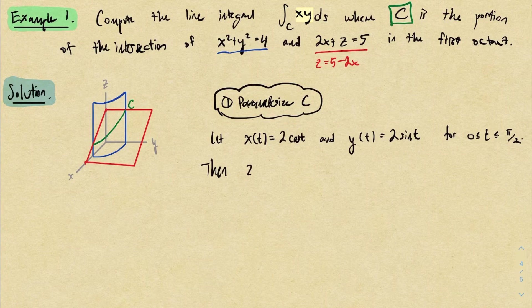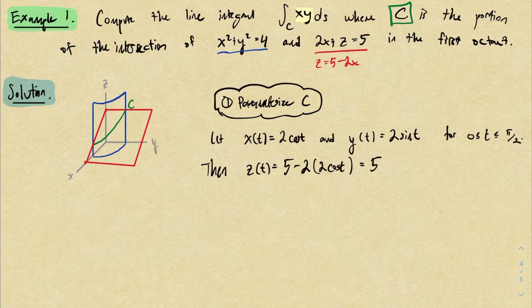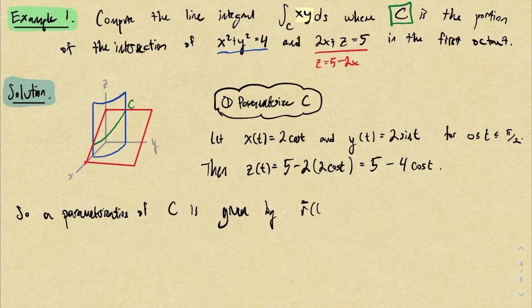But then this curve is sitting in three dimensions, so I need a z coordinate. The point is that the second equation will tell us what z has to be. Because we've determined x and y already, we won't have a choice for z. In particular, look at the red equation again: z equals 5 minus 2x. We've already decided that x has to be 2 cosine t, so we have no choice. Z has to be 5 minus 4 cosine t, and there we go, there's a parameterization for this curve.